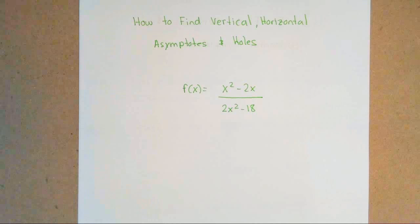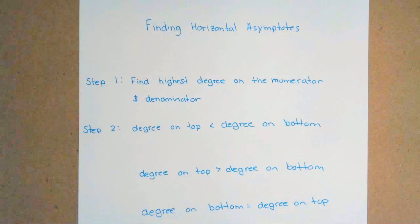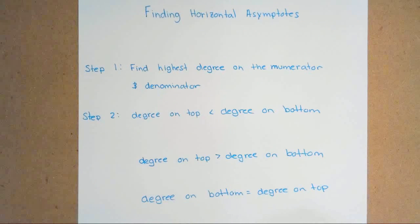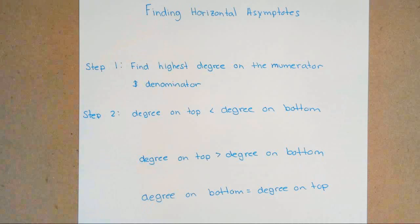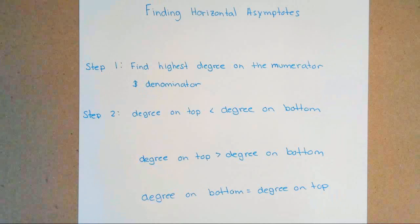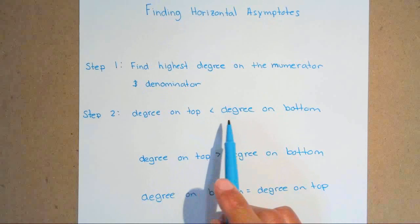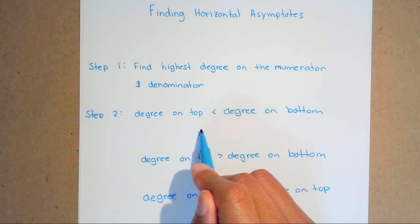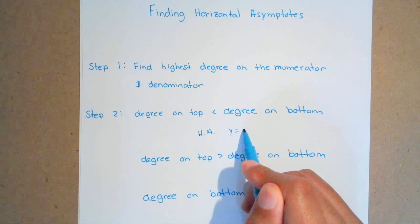The first thing we're going to do is learn how to find horizontal asymptotes. To find horizontal asymptotes, you have to know these steps and rules. The first step is to find the highest degree on the top and the highest degree on the bottom. Then you compare your degrees. Whenever your degree on top is less than the degree on the bottom, your HA — short for horizontal asymptote — is going to be y equals zero, every single time.